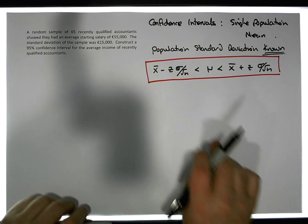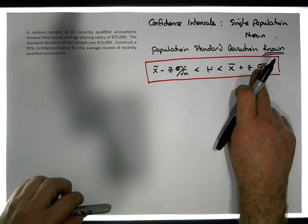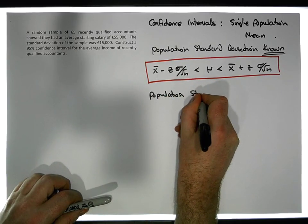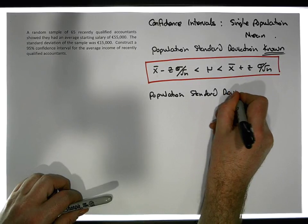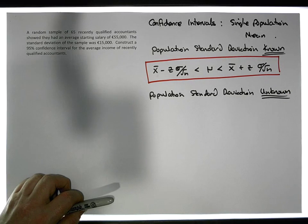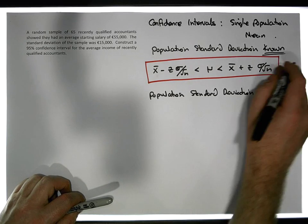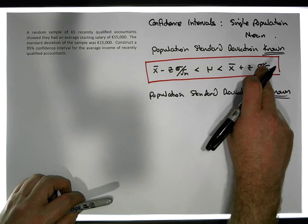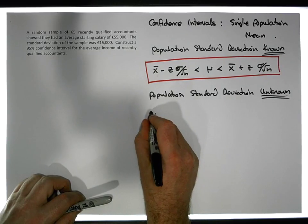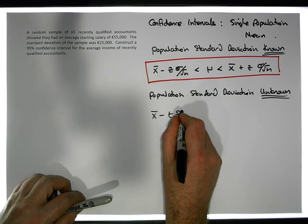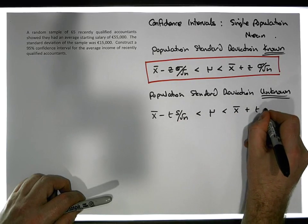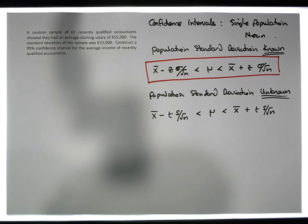That's one formula, but the key requirement is that you must know the population standard deviation. The alternative applies when the population standard deviation is unknown — in that case we rely upon the t-distribution. The formula is quite similar: x̄ minus t times s over the square root of n is less than the population mean, which is less than x̄ plus t times s over the square root of n.